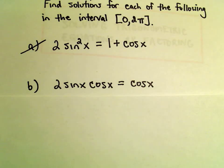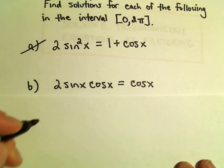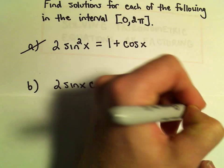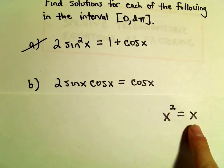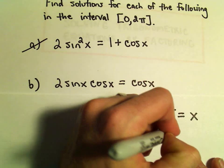The way I always explain why it's not correct to divide both sides by cosine x, suppose instead you had the equation x squared equals x. We're trying to find all solutions to this equation. Suppose you divided both sides by x.